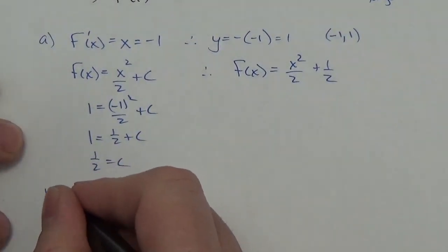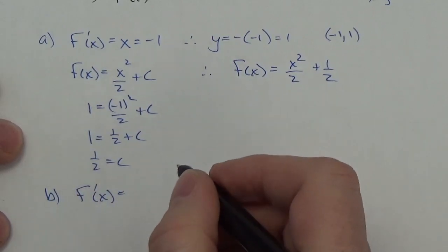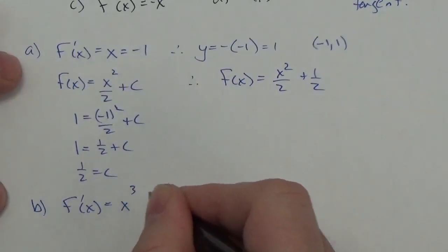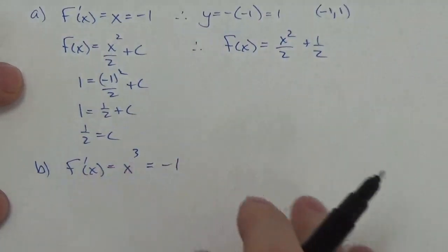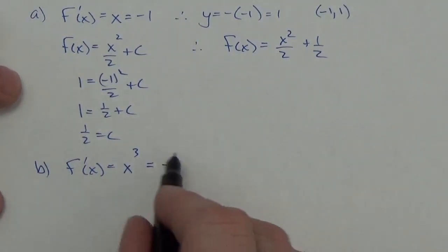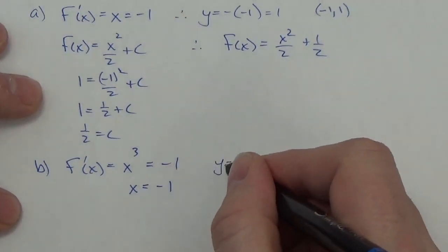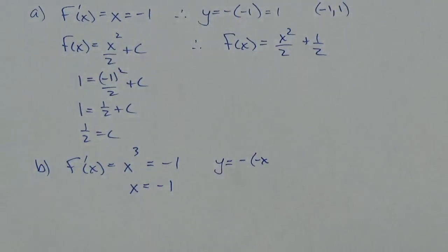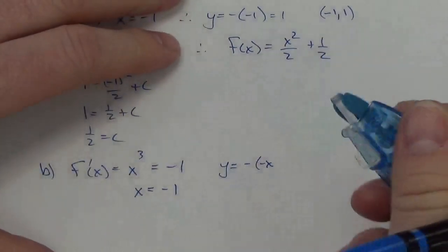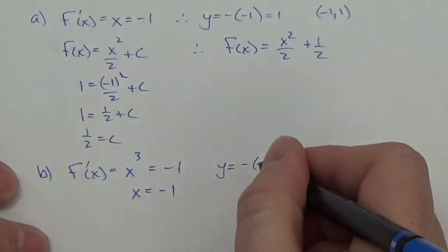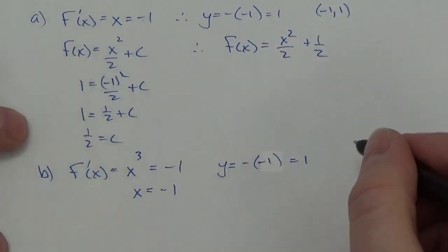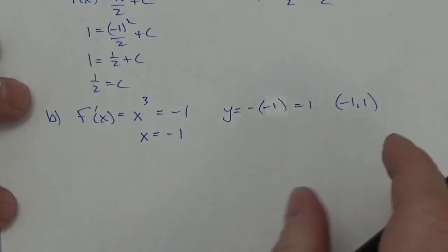Now let's take a look at part b. In this case the derivative function we're given is x cubed. I know that x cubed must equal negative one — the slope of the tangent — so x must equal negative one. I just take the cube root of that. And as soon as I know what x is, I can use the equation of the tangent line. Plugging in negative one gives me positive one. So I know it's going through the point negative one, one — there's my boundary condition.